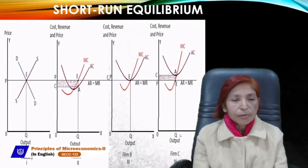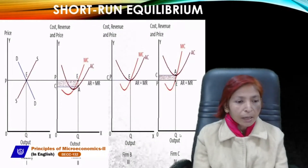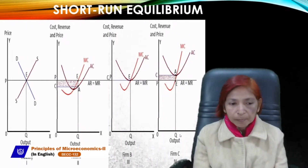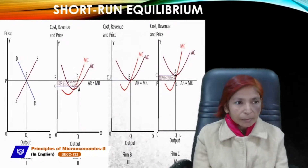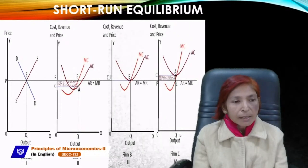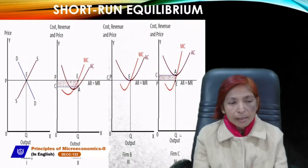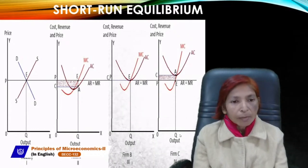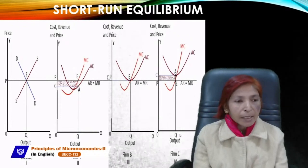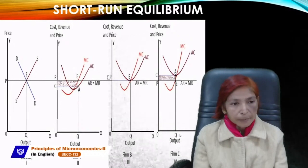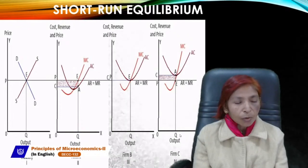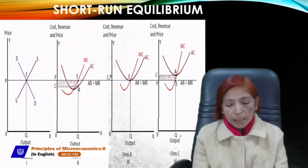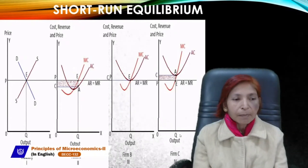These profit conditions — normal profit, abnormal profit, and losses — can be shown with diagrams. There are four diagrams: one for industry and three for firms. The industry's demand curve is always downward sloping and supply curve upward sloping; where they intersect, price OP is determined. This price is taken over by firm A, firm B, and firm C. In all firm diagrams, AR = MR as a horizontal line.